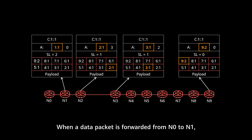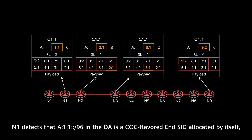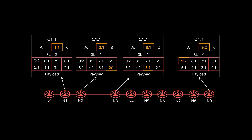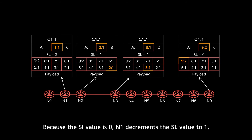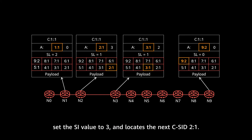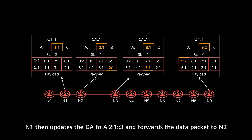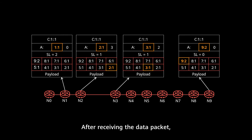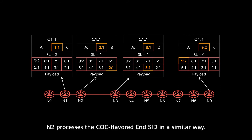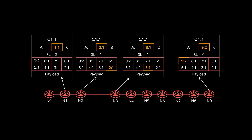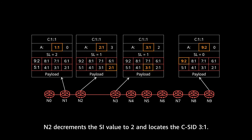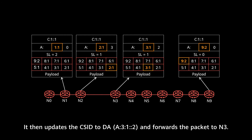When the packet is forwarded from node 0 to node 1, node 1 detects that 8::1:1 in the DA is a COC-flavored End SID allocated by itself, and then it checks the SI value. Because the SI value is 0, node 1 decrements the SL value to 1, sets the SI value to 3, and locates the next C-SID. Then node 1 updates the DA to 8::2:1::3, and forwards the packet based on the updated DA to the next hop, node 2. After receiving the packet, node 2 processes the COC flavor End SID in a similar way. Because the SI value is greater than 0, node 2 decrements the SI value to 2, locates the next C-SID 3:1, updates the C-SID to the DA, and forwards the packet to the next hop, node 3.